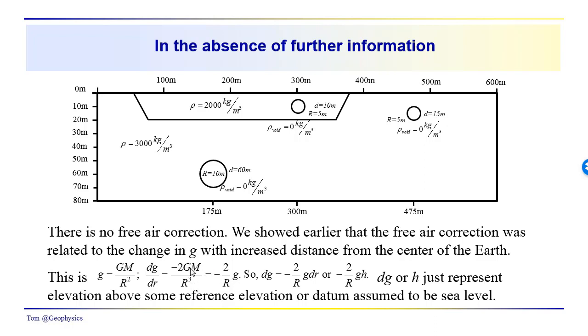We recognize that gM over R squared is embedded in here, and that's basically just g. So we end up with minus 2g over R as the change in the acceleration with a change in distance from the center of the earth. So dg then in this case would be minus 2 over R g dr.